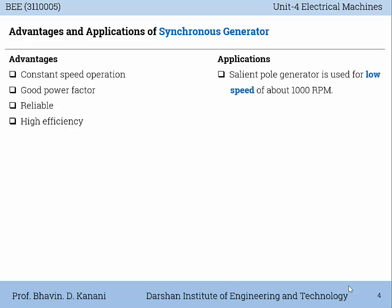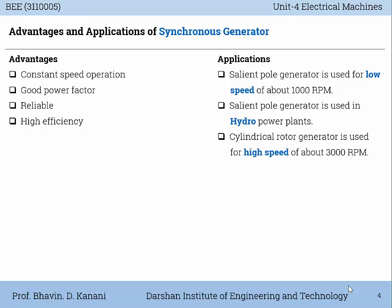Applications: the salient pole generator is used for low speed of about 1000 RPM and is used in hydro power plants, due to its low speed operation. The cylindrical rotor generator is used for high speed of about 3000 RPM and is used in thermal power plants, based on its high speed.